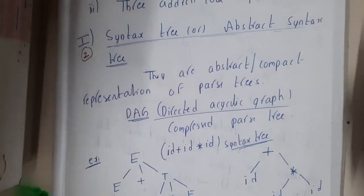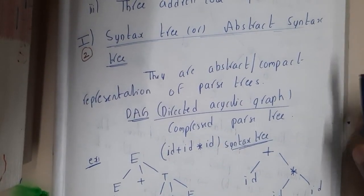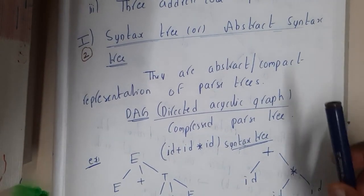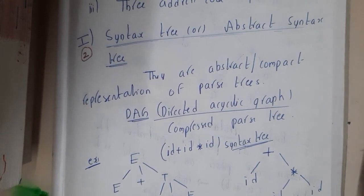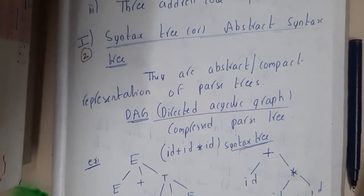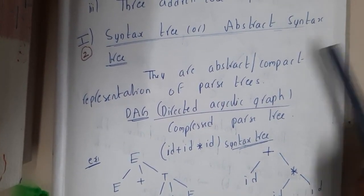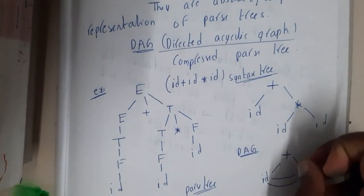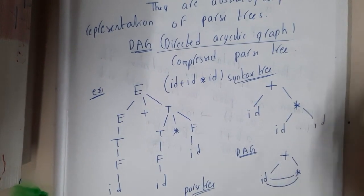Hello guys, we're back with our next lecture. In this lecture, let us go through the concept of syntax tree, or abstract syntax tree, or directed acyclic graph. Basically, these are nothing but compressed versions of parse trees. DAG is one of the most compressed versions to be specific.